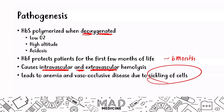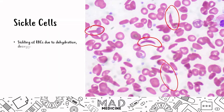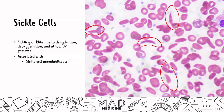These are what sickle cells look like — named appropriately because they look like a sickle. Sickling is due to dehydration, deoxygenation, or low oxygen pressure such as high altitudes. Sickle cells are only seen in sickle cell anemia and sickle cell disease, so if you see this image on Step 1, the answer is sickle cell.